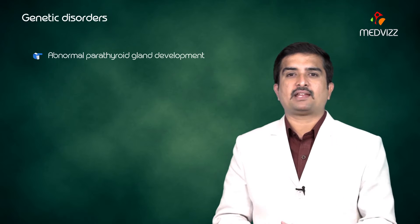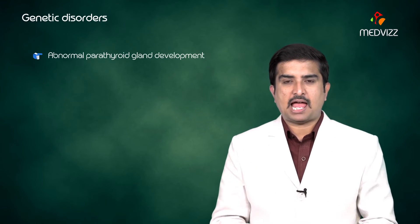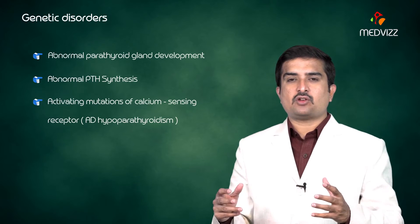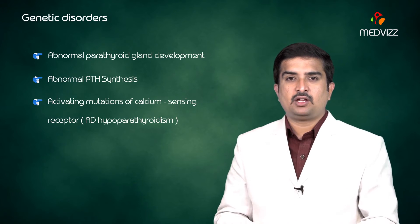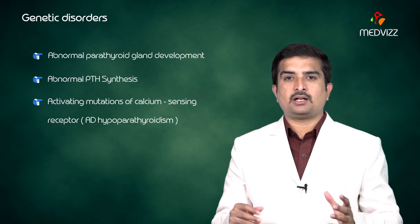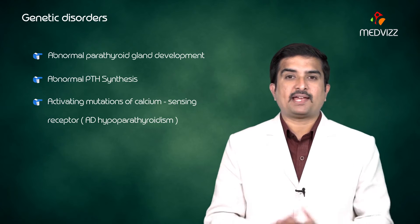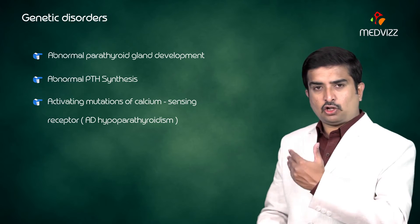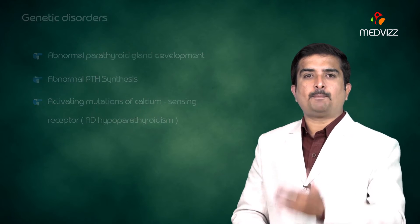Genetic disorders are very important etiological manifestations of hypoparathyroidism. Examples include abnormal parathyroid gland development, abnormal PTH synthesis, and activating mutations of the calcium-sensing receptors, which are autosomal dominant in nature and present with hypocalcemia. Sporadic isolated hypoparathyroidism is also seen.